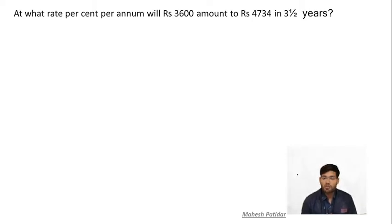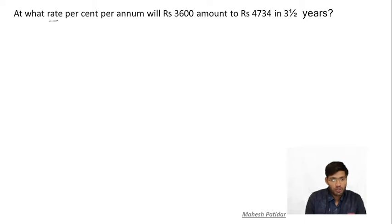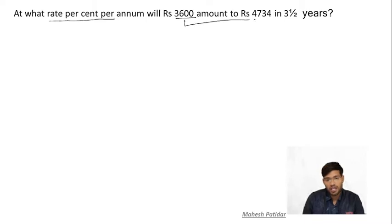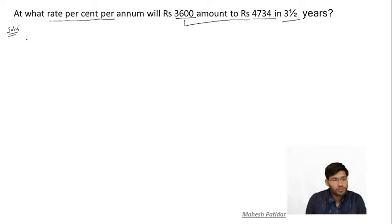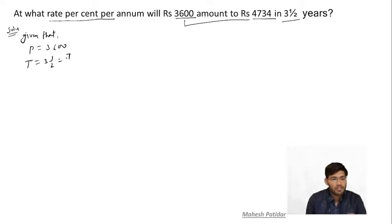Next question: What is the rate percent per annum? Principal = ₹3600, amount = some value, and time = 3 and a half years = 7/2 years. Given: principal = ₹3600, amount = ₹4734, and time = 7/2 years.